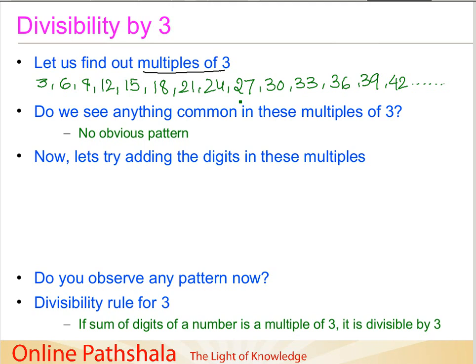Now what we did in our earlier examples when trying to find out the divisibility for other numbers is to see if we can find any patterns. Let us observe these multiples of three and see if there is any pattern visible: 3, 6, 9, 12, 15, 18, 21, 24, 27, 30. Well, we do not see any obvious pattern when we have a look at these multiples of three.